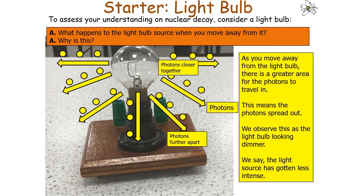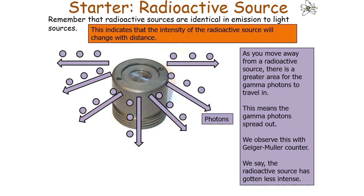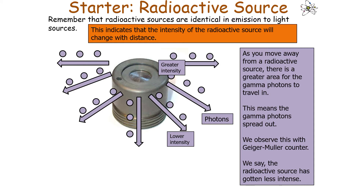How is this different to a radioactive source emitting gamma radiation? The photon emitted by the light bulb is a visible light photon, while the photon emitted by a radioactive source is a gamma photon — one with a greater frequency and therefore greater energy. But apart from this, the process is actually identical. As you move away from the light bulb, there's a greater area for the photons to travel in, so the photons spread out and we observe the light bulb looking dimmer — we say the light source has gotten less intense.